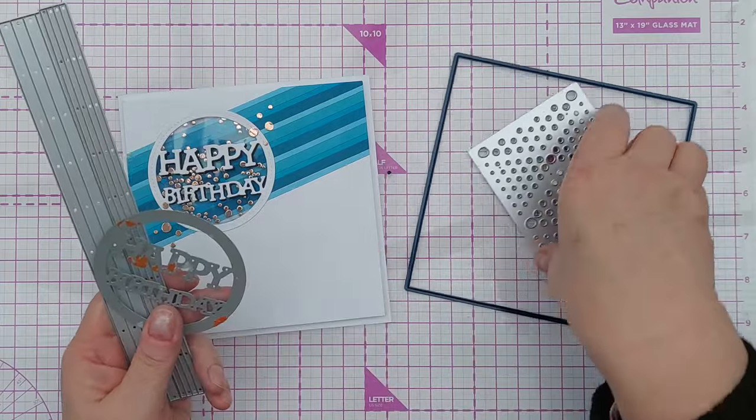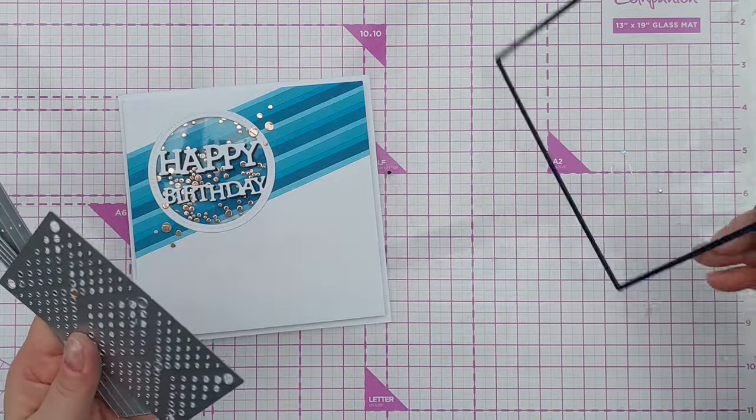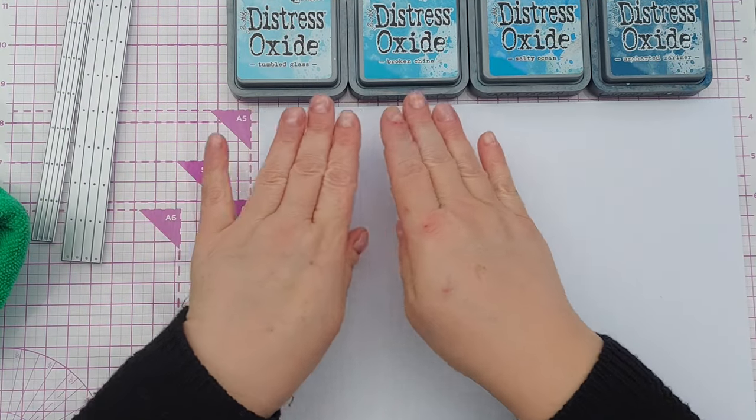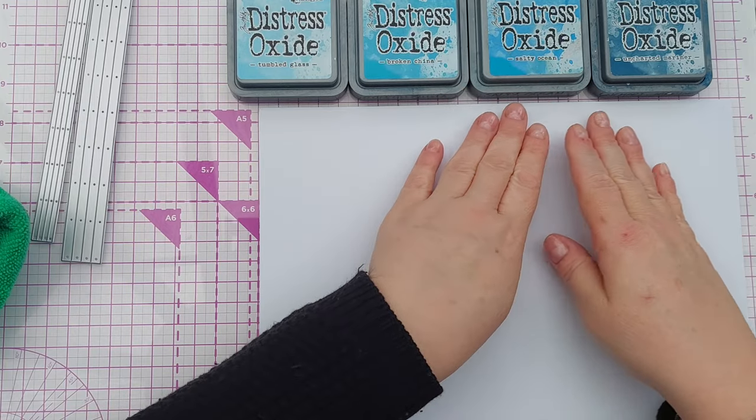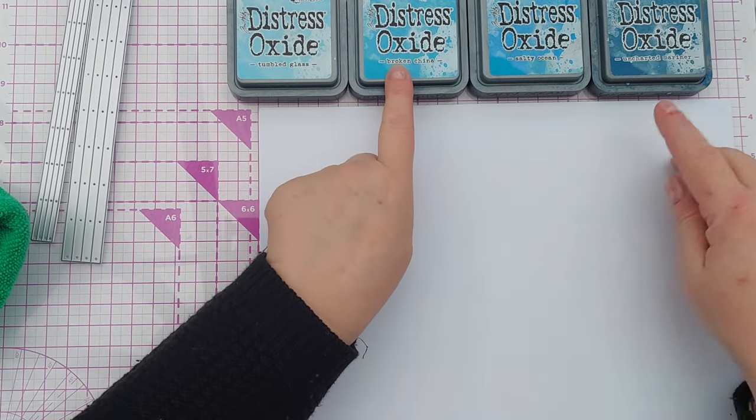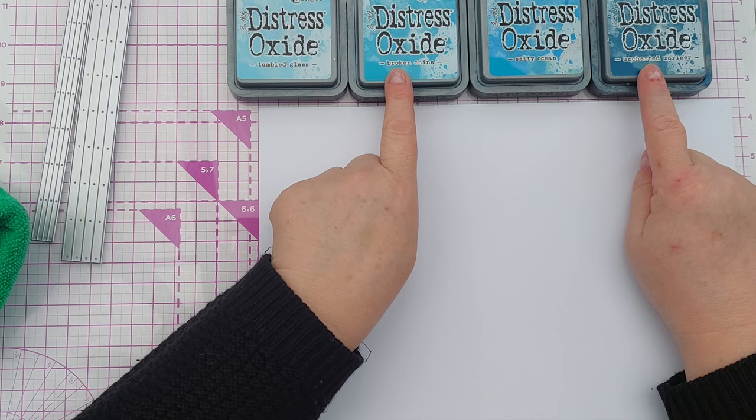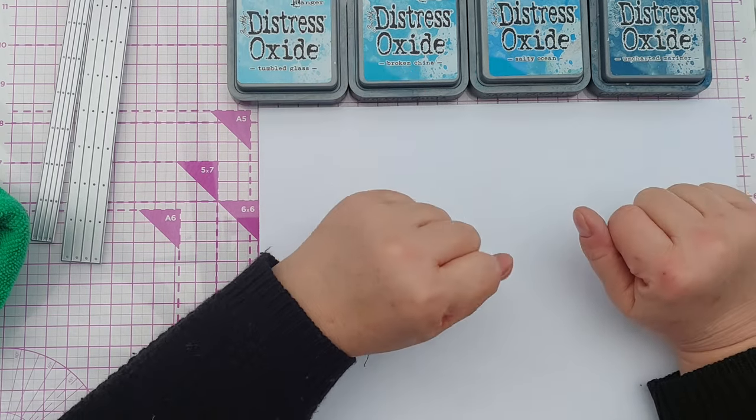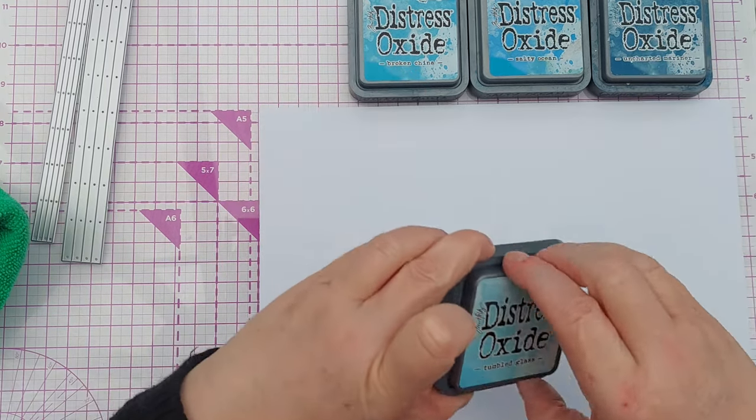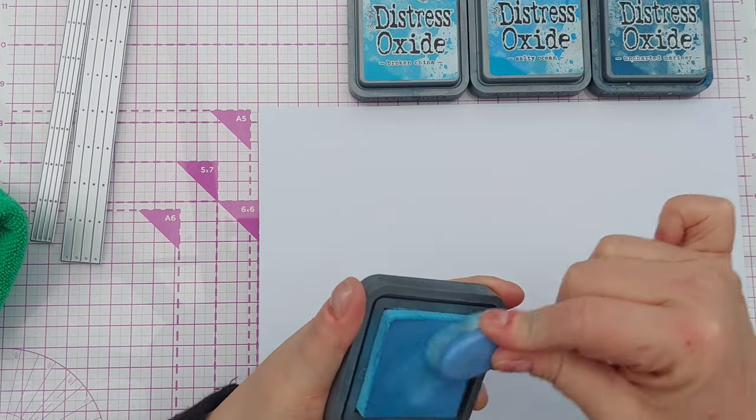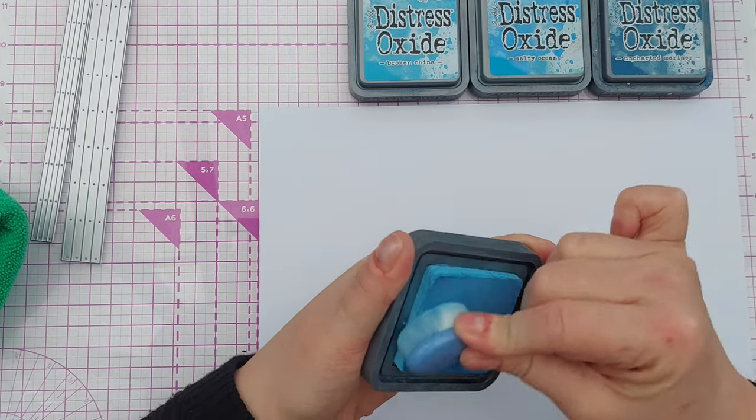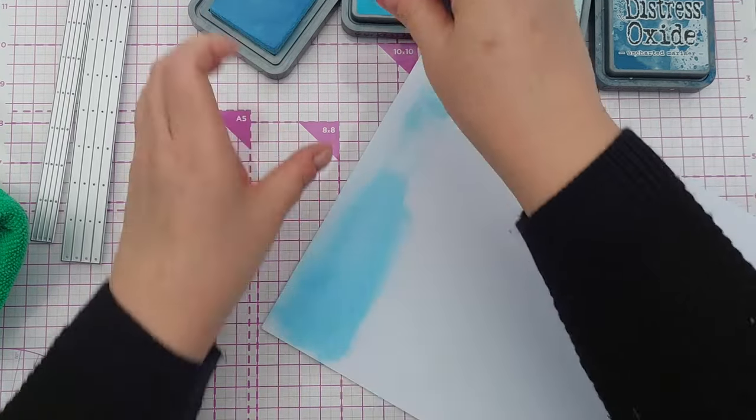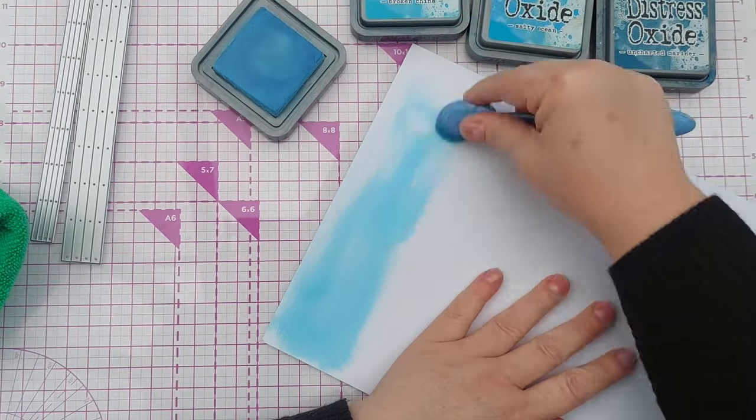For my blues I've got Tumbled Glass, Broken China, Salty Ocean, and Uncharted Mariner. I think Broken China and Uncharted Mariner are ever so slightly greeny blues, but I'm going to put them with the blues today. I'm going to cut some strips from some of the card that I'm going to blend my colors on.